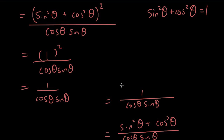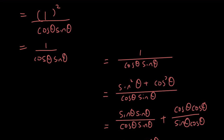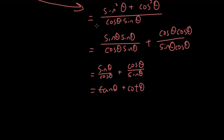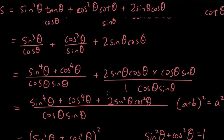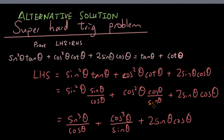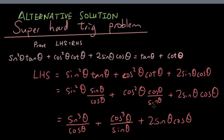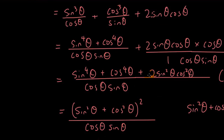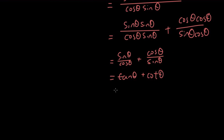Now I'm at exactly where I was working up from the bottom, so the two sides meet. This is a very creative way to do the problem. Two tips: first, change everything to sine and cosine; second, work from the top towards the bottom and from the bottom towards the top simultaneously. The left hand side is equal to the right hand side. Thanks for watching guys, see you next time.